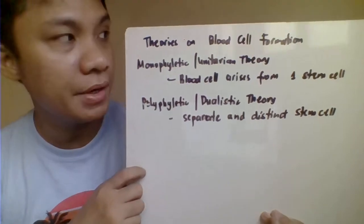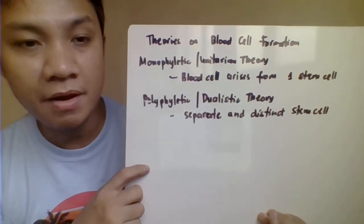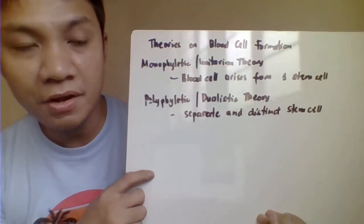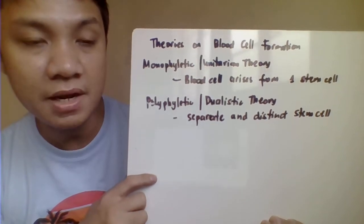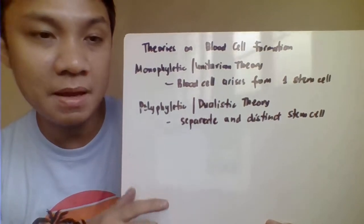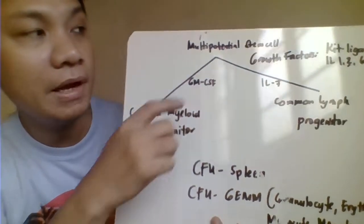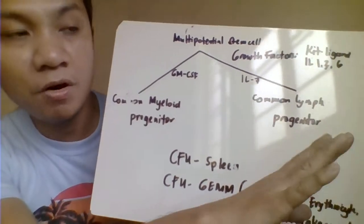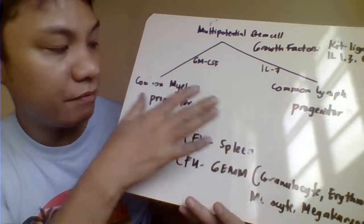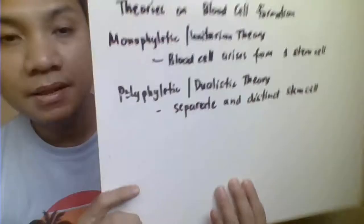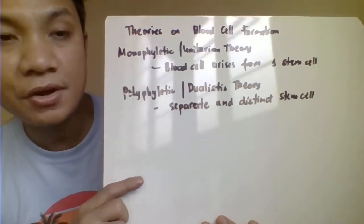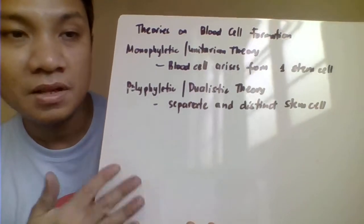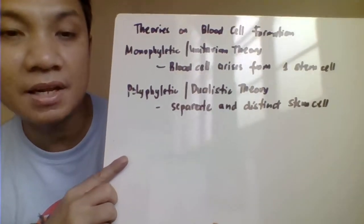There are two theories for blood cell formation. The monophiletic or unitarian theory believes all blood cells come from one stem cell — the multi-potential stem cell — giving rise to both the common lymphoid and common myeloid progenitors. The polyphiletic or dualistic theory states that all blood cells arise from different stem cells with different cell compartments.